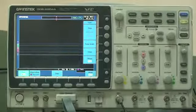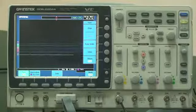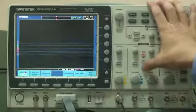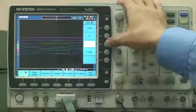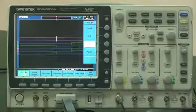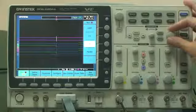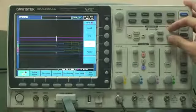We're going to bus decoding mode. Press bus. To SPI. Now, set time division to 50 microsecond per division.